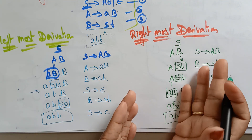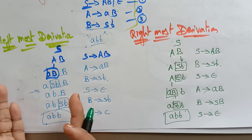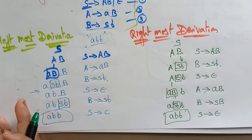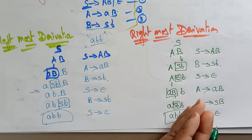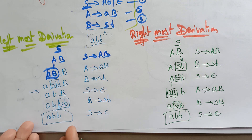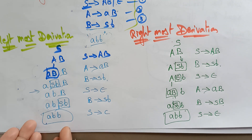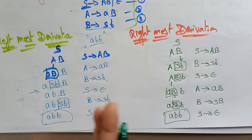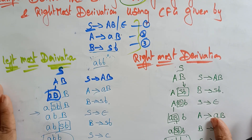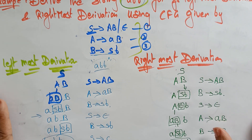This is how you replace production rules using rightmost derivation. Whatever derivation you use — leftmost or rightmost — you can derive the same string. The technique is different; choose leftmost or rightmost based on your convenience. Thank you.